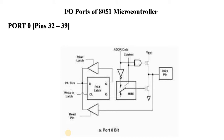For accessing external memory, the AT51 uses port 0 and port 2 to generate the address. The lower half of the address comes from port 0 and upper half from port 2, using ALE pulses to latch the address to the external bus. To configure port 0 as an input port, the internal bus writes 1 to the D flip-flop and the control pin is set to 0, so the multiplexer is connected to Q-dash of the D flip-flop, connecting the pin to the input buffer.